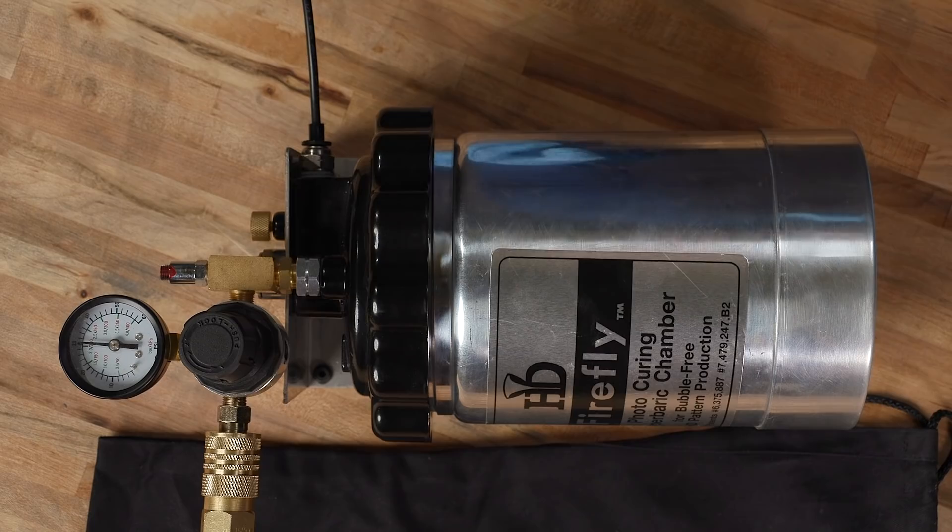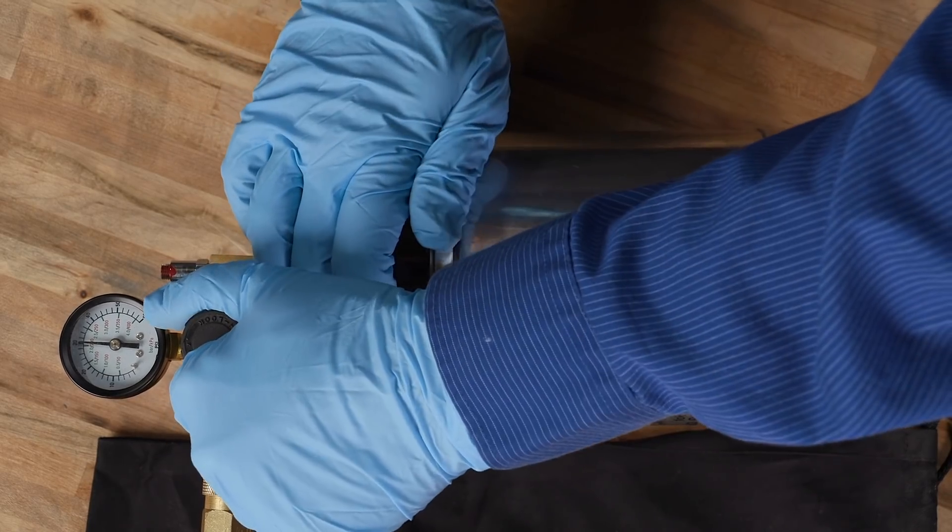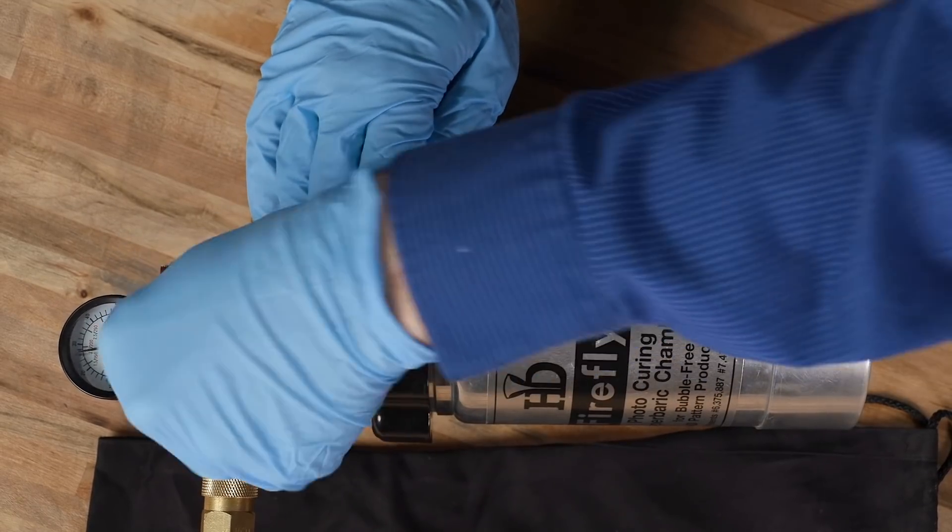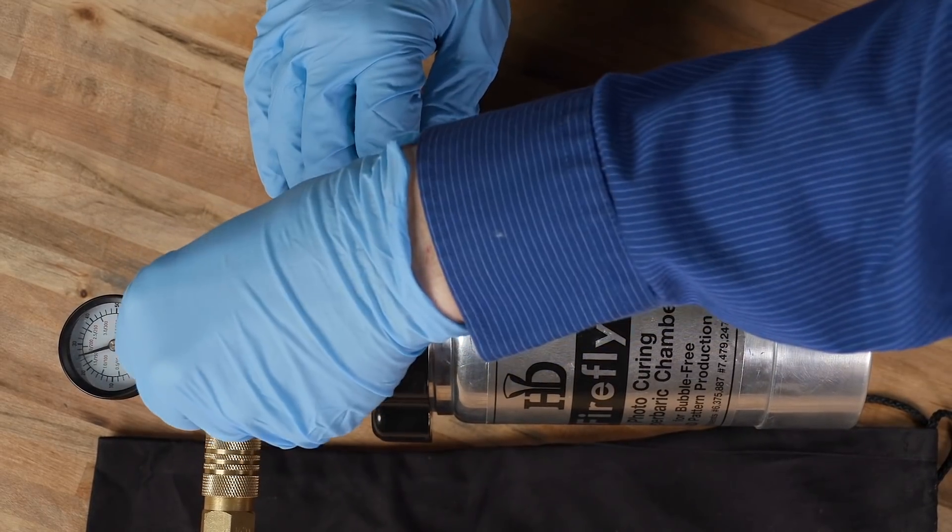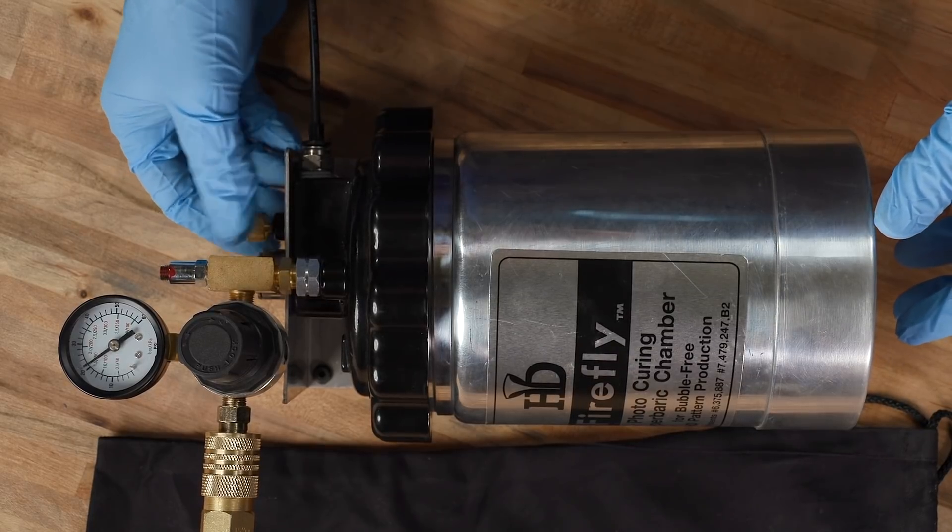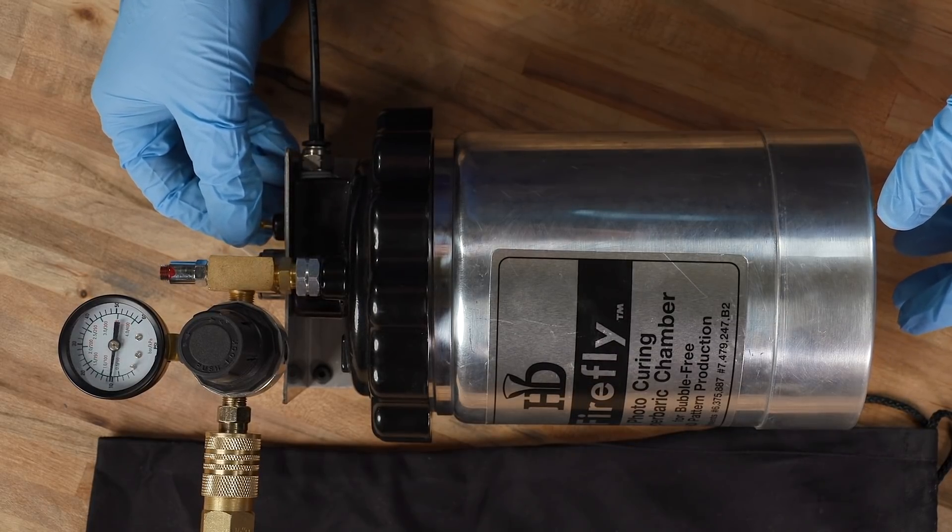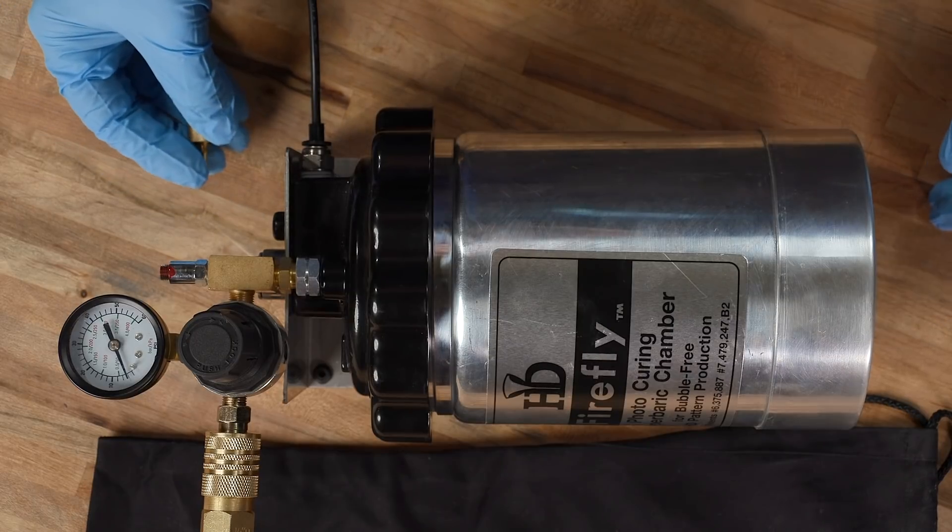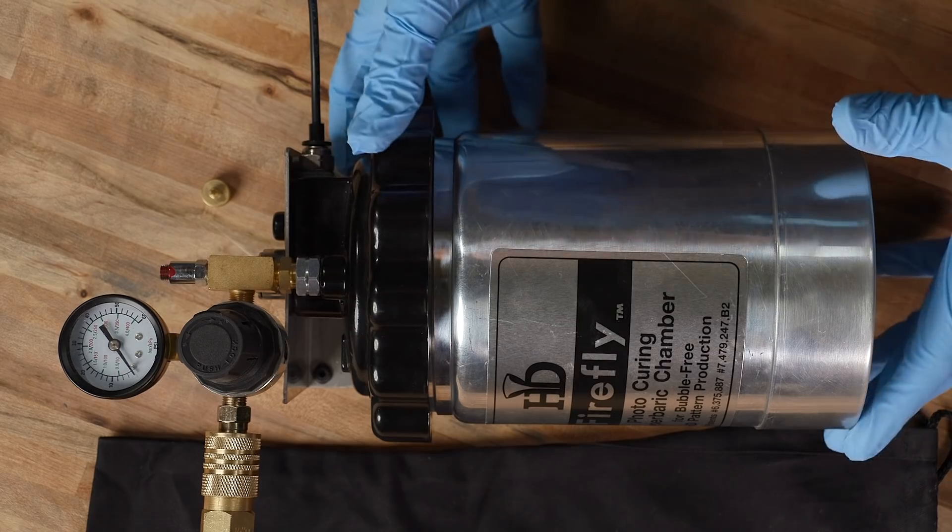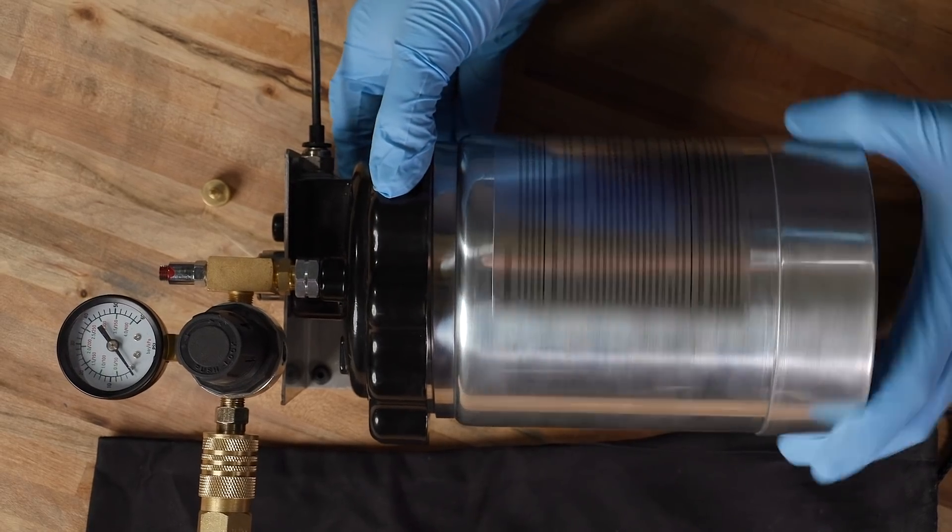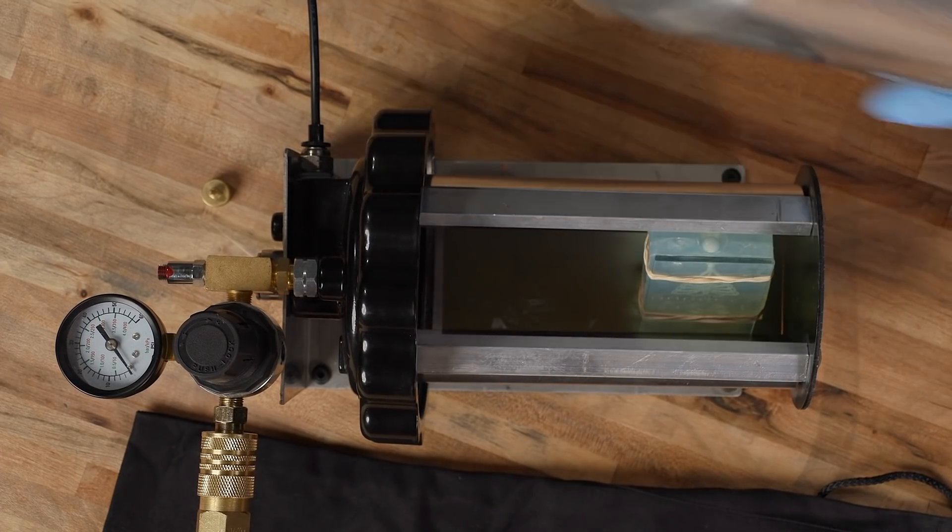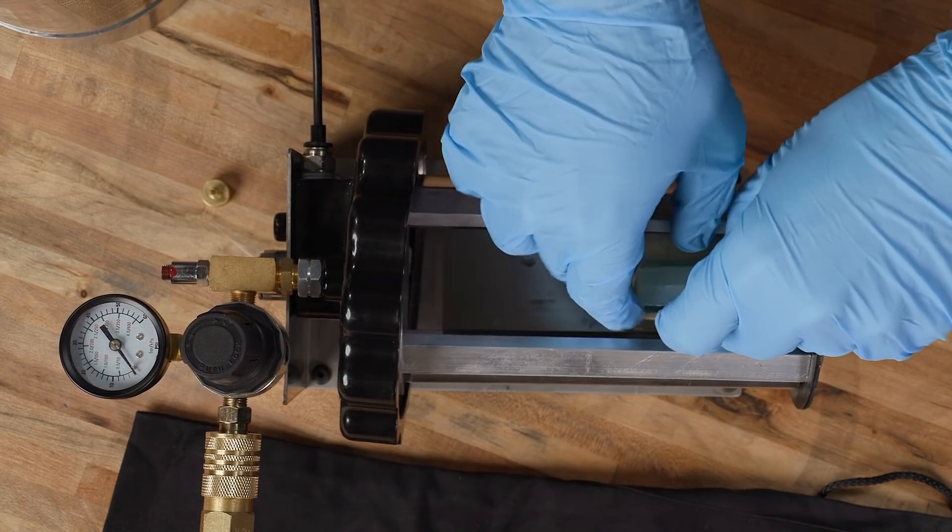Okay, we've turned off the UV cure unit and now I'm going to depressurize the chamber. So I'm going to release the pressure on the valve and then bleed it from the side. Now we can remove the casing and remove our mold.